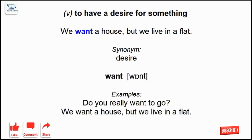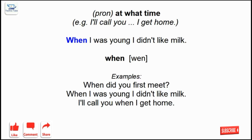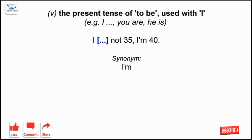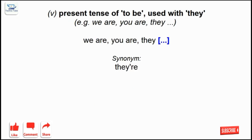Want: to have a desire for something. When: at what time? I am: the present tense of to be, used with I. They are: present tense of to be, used with they.